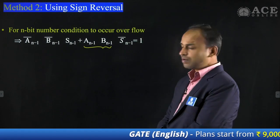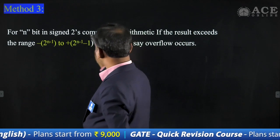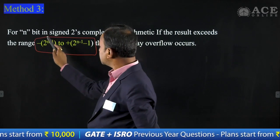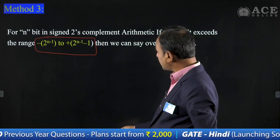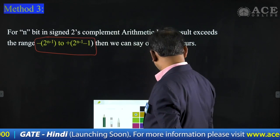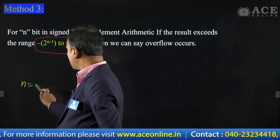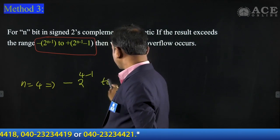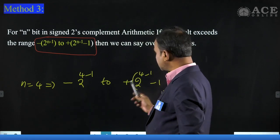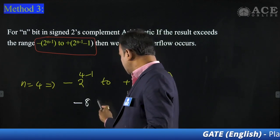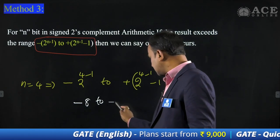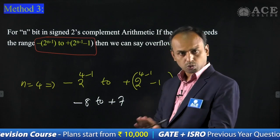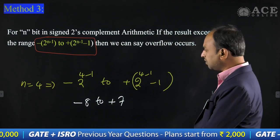One more simple method — Method 3. For an N-bit number in two's complement arithmetic, if the result exceeds the range from minus 2 power (n-1) to plus 2 power (n-1) minus 1, then overflow occurred. In our question, N equals 4, so the range is minus 2 power 3 to plus 2 power 3 minus 1, which is minus 8 to plus 7. If the result exceeds this range, overflow occurred; within this limit means no overflow.